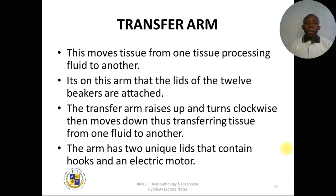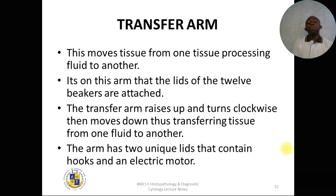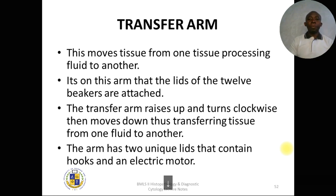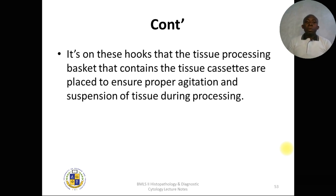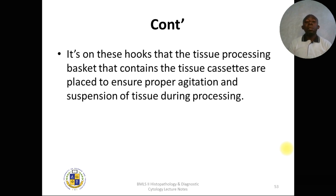The transfer arm rises up, turns clockwise, and moves down — transferring the tissue from one fluid to another. The arm has two unique lids with hooks and an electric motor that drives movement and rotation between positions. The tissue processing baskets containing cassettes are placed on these hooks to ensure proper suspension of the tissue during processing, which is essential for good fixation and dehydration results.